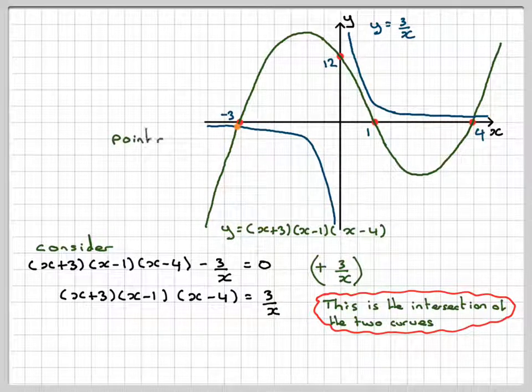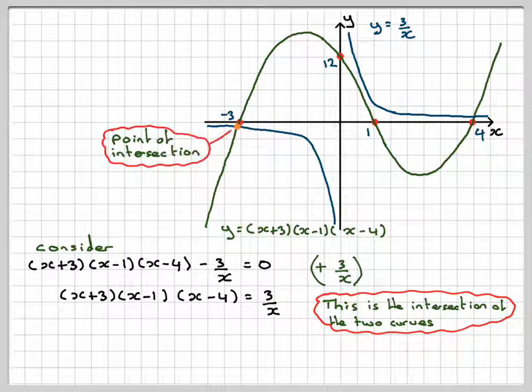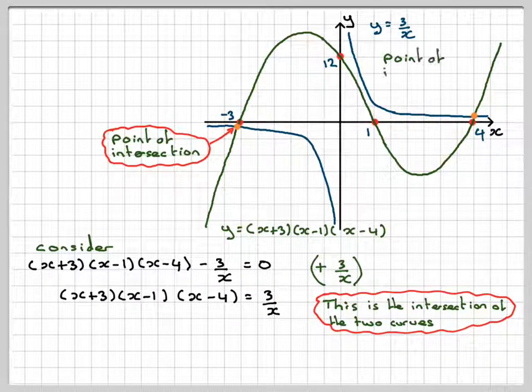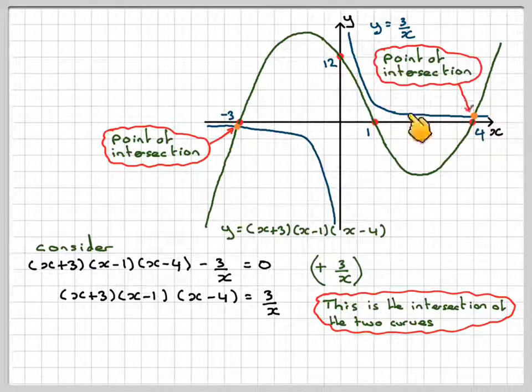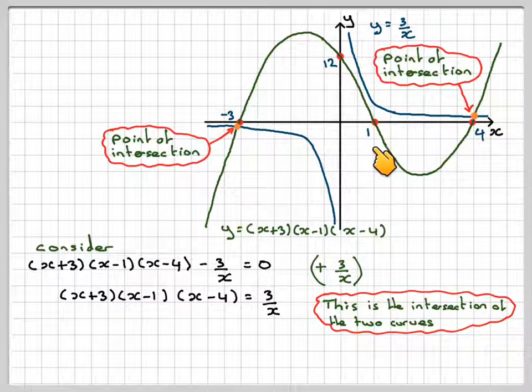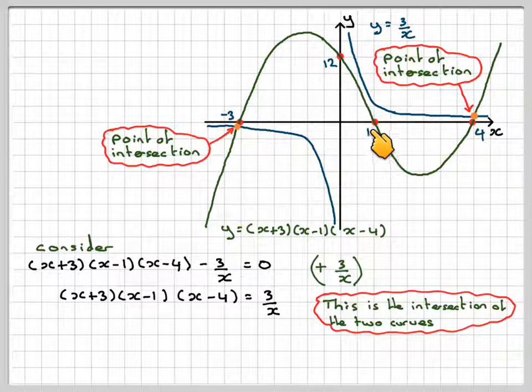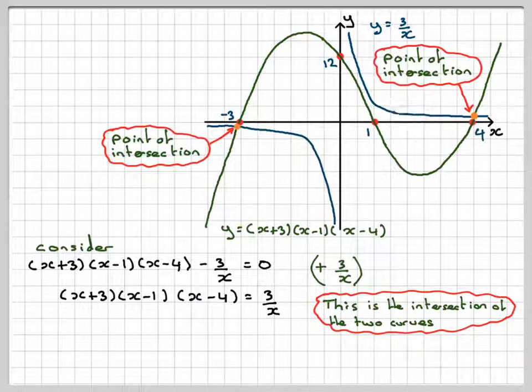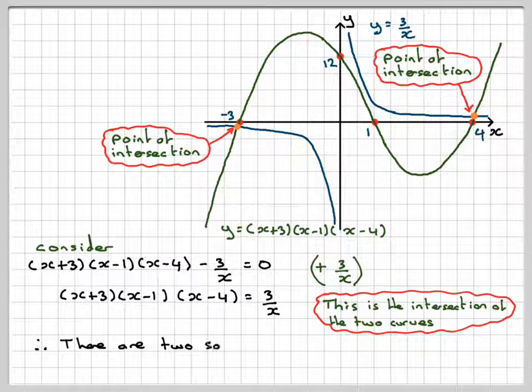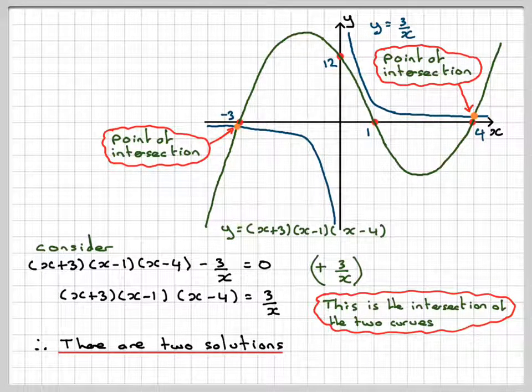The points of intersection are the ones here in orange, this one here and this one here. We can count two of them. We know it won't cut over here because, as I said, if you do 3 divided by 1, it's 3. And at 1, the cubic is actually equal to 0. Therefore, it will be above at this particular point, and there are two solutions to the equation.